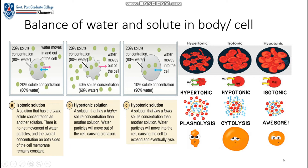We specifically have 3 types of solutions. First we have isotonic solution, then hypertonic solution, and then hypotonic solution. In isotonic solution, the solute concentration outside the cell is equal to the solute concentration inside the cell. As you can see in this diagram: 20% solute concentration and 80% water outside the cell, same as 20% solute concentration and 80% water inside the cell. Water moves in and out of the cell equally.